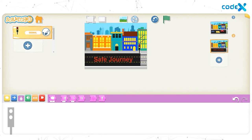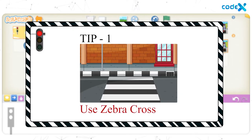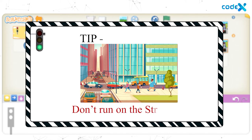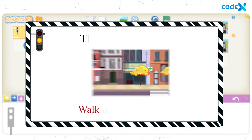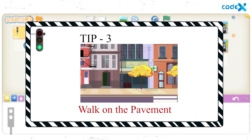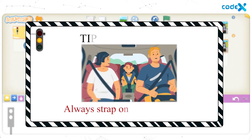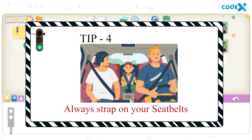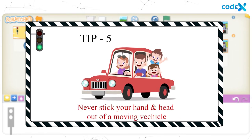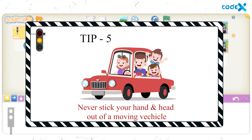I will tell you some road safety tips before moving on. Number one: cross the road only through the zebra crossing. Number two: do not run on the streets — running through streets puts you at risk. Number three: always walk on the pavement and never on the road. Number four: while you're in a car, always strap on your seat belt. Number five: never stick your hand or head out of a moving vehicle — it's dangerous. These are some facts you must always keep in mind while you're on the road.